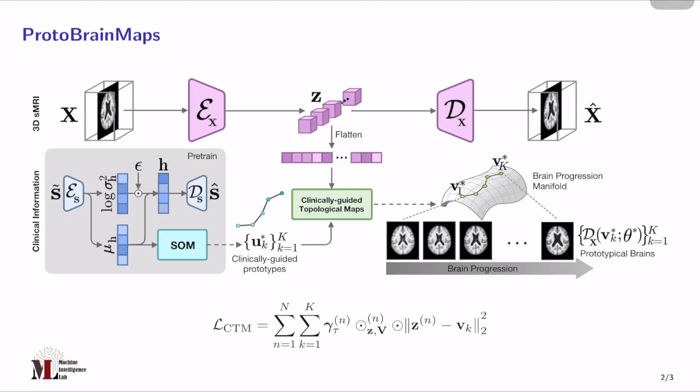Here, we utilize two modalities: the brain sMRI and the corresponding clinical information. This clinical information comprises clinical stages including Cognitive Normal, Mild Cognitive Impairment or MCI, and AD. In addition, we also included the Mini-Mental State Examination score as the common cognitive score to measure the severity of AD. We fed such clinical information through a VAE to obtain the latent features. The next step is to employ the Self-Organizing Map or SOM to cluster and establish a set of prototypes in the latent space.